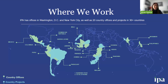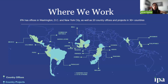As you can see in the slide, we have offices around the world. IPA has its main office in Washington, D.C. and New York City, but it also has offices in more than 20 countries, such as Peru, Colombia, Ghana, and the Philippines. We also have projects in more than 30 countries. For example, in the Peru office, we work not only on projects in Peru, but also in Belize, Ecuador, and Paraguay.